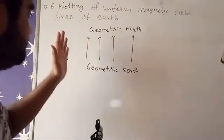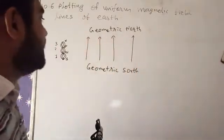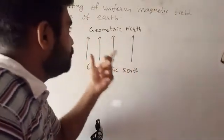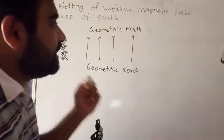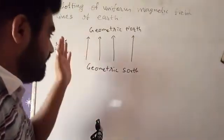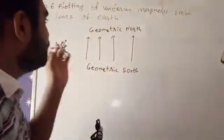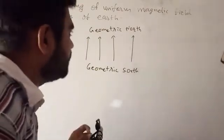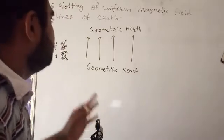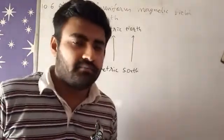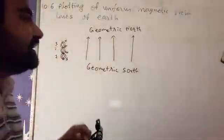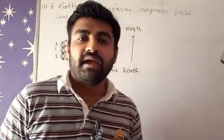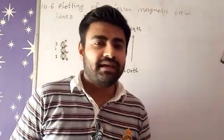These parallel lines indicate that this is a uniform magnetic field. Uniform magnetic field characteristics are that they are parallel with each other and equidistant from each other. This is how we can plot uniform magnetic field lines of Earth by using a magnetic needle, which we use in a magnetic compass.